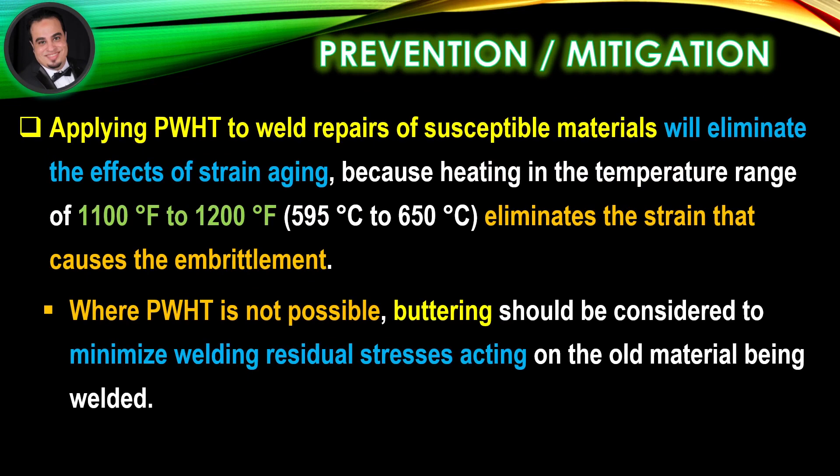Applying post-weld heat treatment to weld repairs will eliminate the effects of strain aging, because heating in the temperature range of 1100°F to 1200°F eliminates the strain that causes the embrittlement.